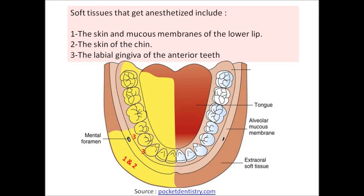Soft tissues that get anesthetized include the skin and the mucous membranes of the lower lip, the skin of the chin, and the labial gingiva of the anterior teeth.